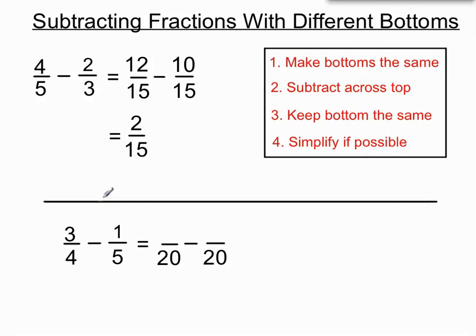Let's carefully think to ourselves. What have we done to the 4 to create 20? Well, I think we've times that by 5. Better do the same to the top. Times by 5. 3 5's are 15 for that new top. What have I done to the 5 to make 20? I've multiplied by 4. I'd better do the same to the top. So I think 4 times 1 is 4.